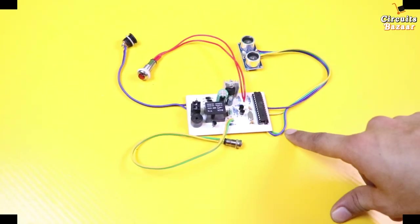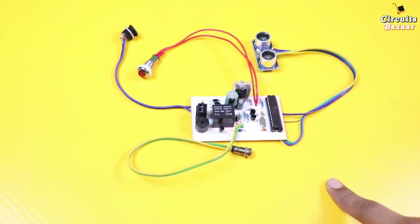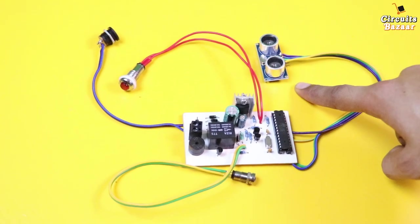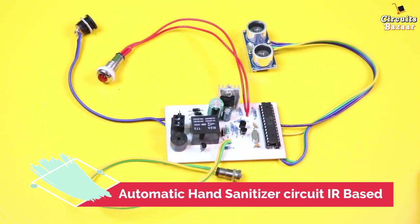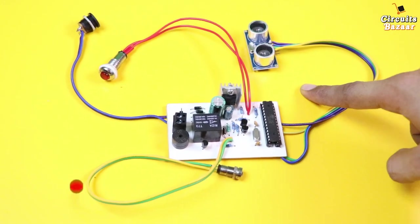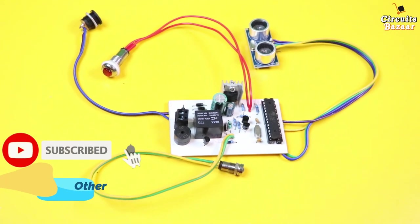This is the circuit for touch free automatic hand sanitizer dispenser. It's using ultrasonic sensor, not IR sensor. As you know that IR sensor have problem during daytime, but ultrasonic sensor have no problem. You can use this in complete sunlight as well.